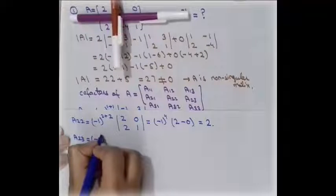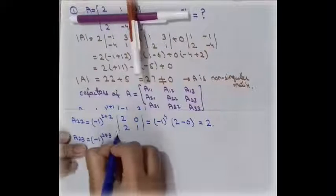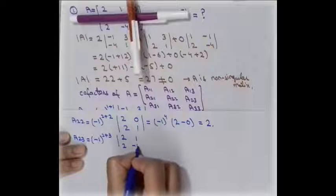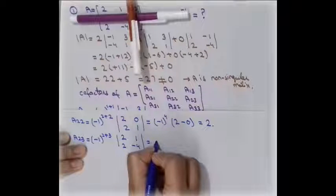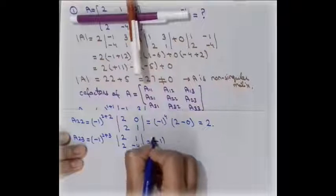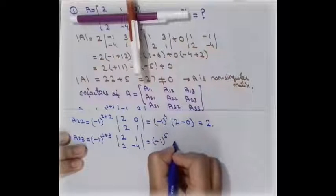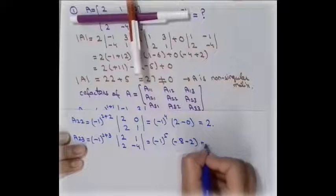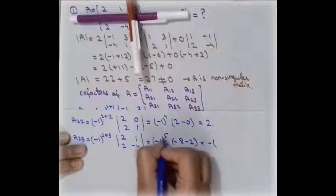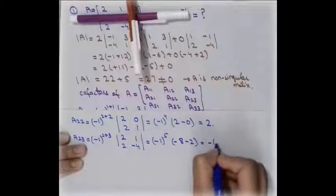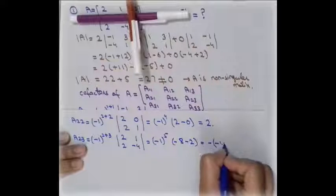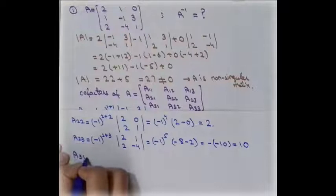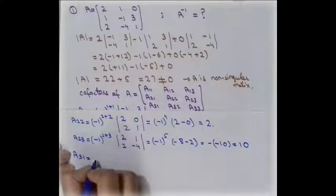For A23, with i+j = 2+3 = 5, the remaining determinant is formed by elements 2, 1, 2, -4. Computing: -8 - 2 = -10. Since the power 5 is odd, (-1)^5 = -1, so A23 = -1 × (-10) = 10.